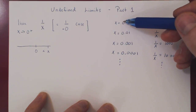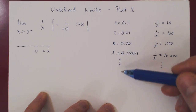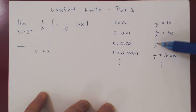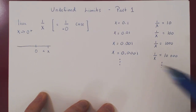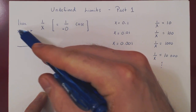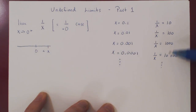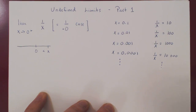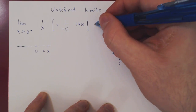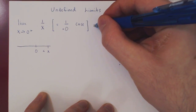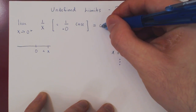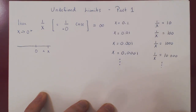As x shrinks to 0 from the positive side, 1 over x blows up to infinity. So this limit does not exist — it is undefined — but very specifically by blowing up to positive infinity. And so we write the limit is equal to positive infinity.